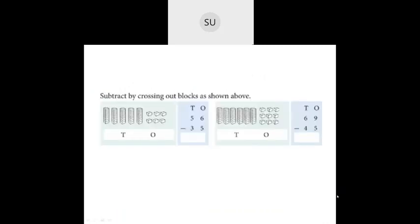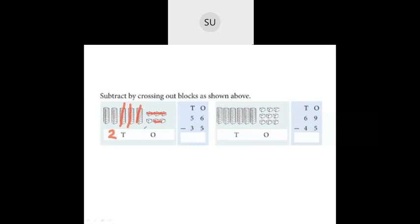Now let's look at more examples — subtract by crossing out blocks. For 56 minus 35: we have five tens and six ones. We remove three tens, leaving two tens. From the ones we remove five ones from six ones, leaving one. So 56 minus 35 is 21.